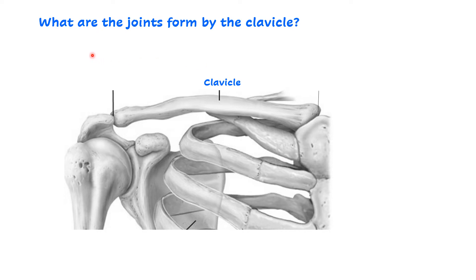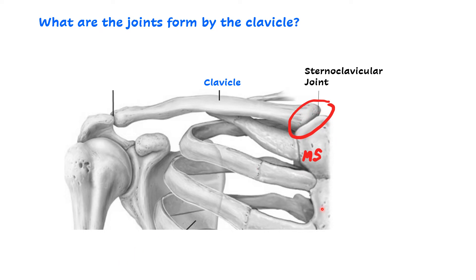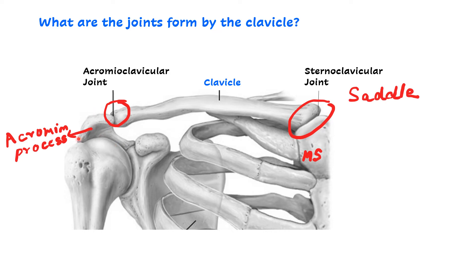What are the joints formed by the clavicle? At the medial end, it articulates with the manubrium sterni to form the sternoclavicular joint, which is a saddle variety of synovial joint. At the lateral end, the clavicle articulates with the acromion process of the scapula to form the acromioclavicular joint, which is a plain type of synovial joint.